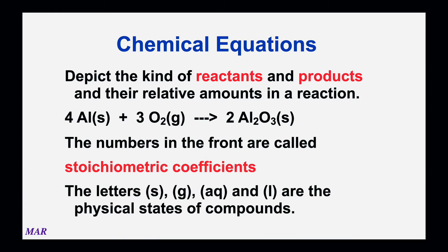Instead of parts, you can probably imagine that's going to have something to do with moles. There's another thing about that reaction: there's a little S, G, and S — those refer to the states of the compounds. You don't always see them, but they are very helpful. That tells the chemist you have a solid form of aluminum reacting with a gaseous form of oxygen, and the aluminum oxide you're going to make is also a solid. Reactants are everything to the left of the arrow — what goes into the reaction, the ingredients.